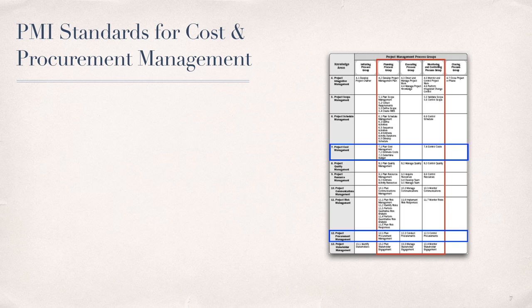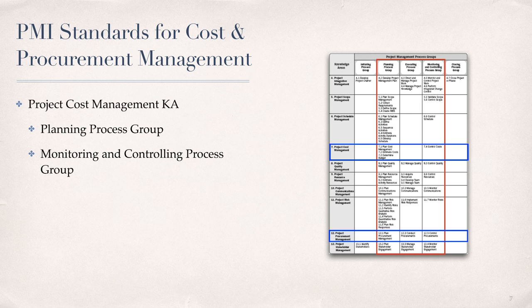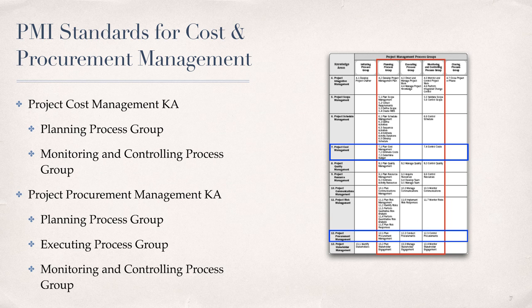We now turn our attention to the PMI standards for project cost management and project procurement management. A quick look at the PMBOK project management group and knowledge areas diagram shows that there are four processes identified in the project cost management knowledge area, aligned with the planning process group and the monitoring and controlling process groups. The project procurement management knowledge area includes three processes aligned with the planning, executing, and monitoring and controlling process groups. Now let's take a look at both knowledge areas in greater detail.